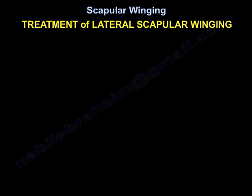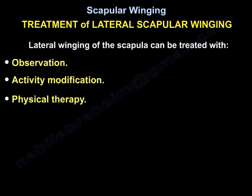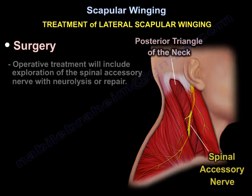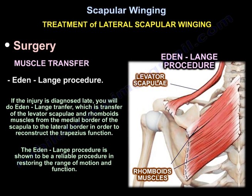Treatment of lateral winging of the scapula includes observation, activity modification, and physiotherapy. Operative treatment includes exploration of the spinal accessory nerve with neurolysis or repair, followed by muscle transfer. The Eden-Lange procedure is used when the injury is diagnosed late: it involves transfer of the levator scapulae and rhomboid from the medial border of the scapula to the lateral border to reconstruct trapezius function. This procedure is shown to be reliable in restoring range of motion and function.